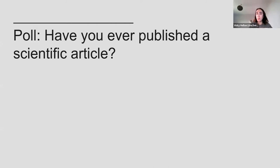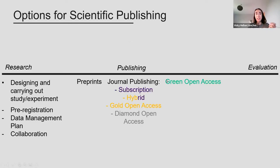So that was a two-thirds split — only a third of the audience have published a scientific article, which is really interesting. Hopefully this next bit will be interesting to give you more of an insight into that process. If you are a scientist today, what are your options for publishing?